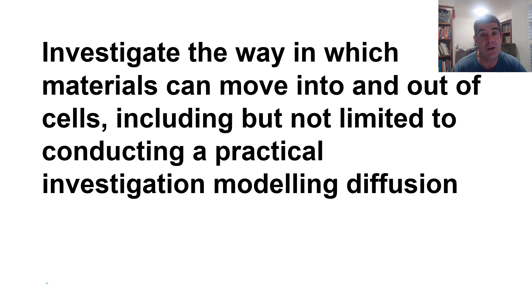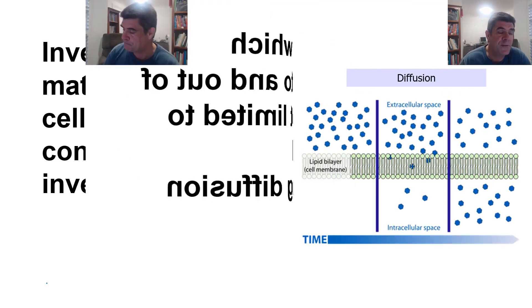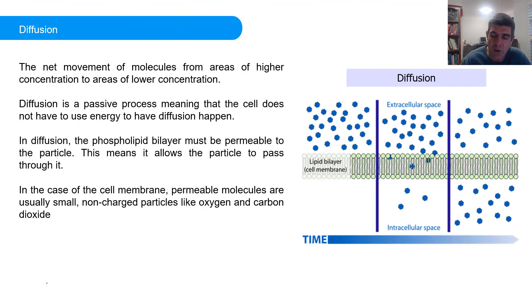So let's briefly look at the concept of diffusion now. Diffusion is simply the movement of particles, molecules, atoms, ions from areas of high concentration to areas of low concentration. This is a passive process, and that means the cell doesn't have to waste energy getting diffusion to occur. It happens naturally.